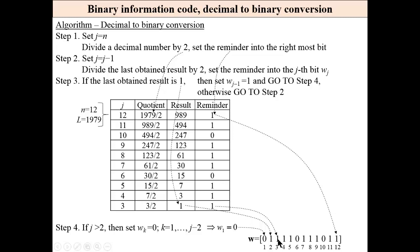These remainders are set as the next bits of the code word. Here we are at j equal 3. If the last obtained result is 1, then set wj minus 1, in our case w2 equal 1, and go to step 4. If j is greater than 2, then set wk equals 0 for k from 1 to j minus 2. In our case it is only one zero.